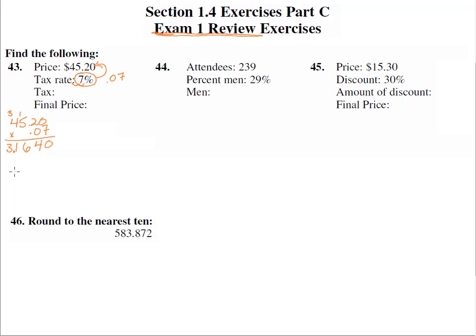Now how many decimal places do we have here? One, two, three, four. Four places behind the decimal, so the decimal has to go right there. That means the tax is $3.16. If we round to the nearest penny, this is less than five so that stays at six. $3.16 in tax.